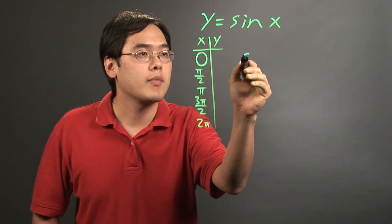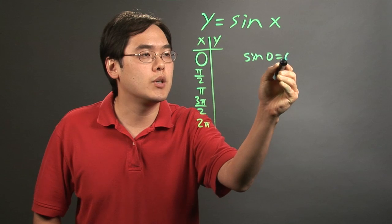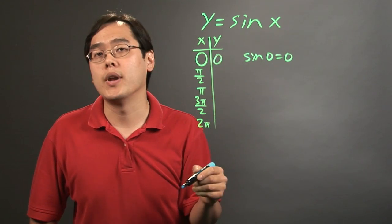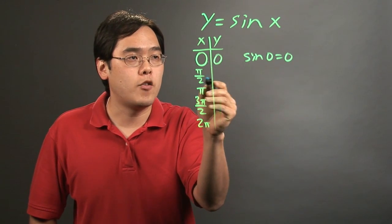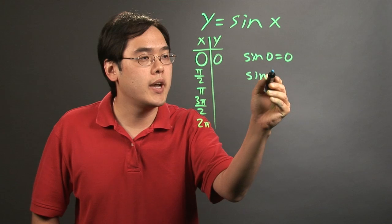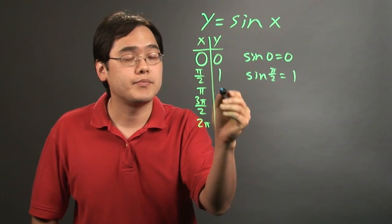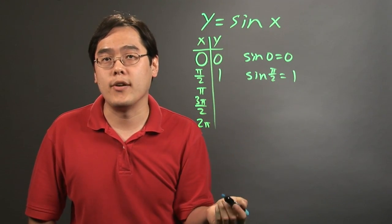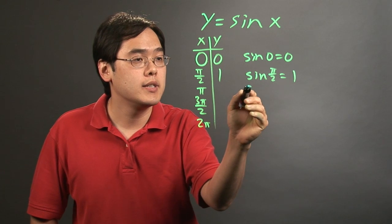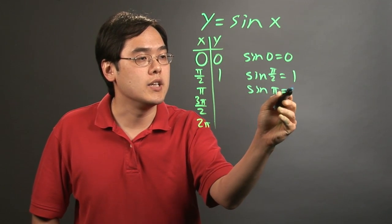When you plug in 0, sine of 0 is equal to 0. So when x is 0, y is 0. For pi over 2, sine of pi over 2 is equal to 1. That's one of those common trig values. With pi, sine of pi is 0.